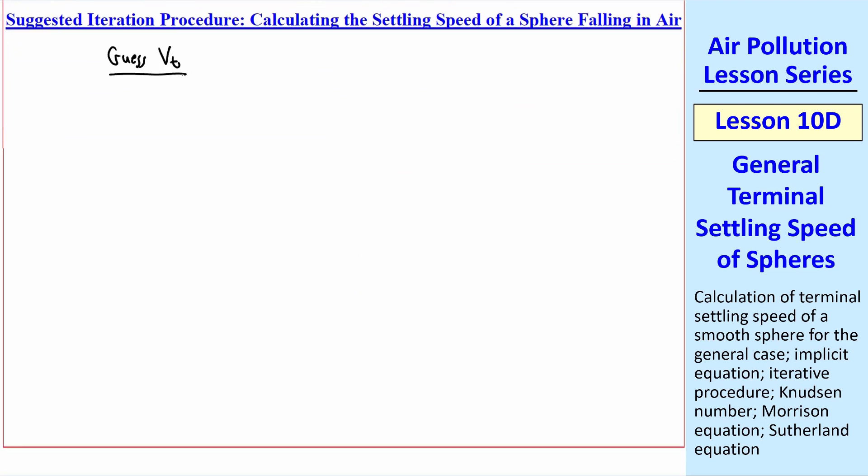You guess some value of vt in meters per second. Calculate the Reynolds number, no units. Calculate Cd, again no units. Calculate a new vt, again in meters per second.